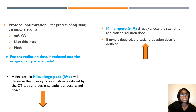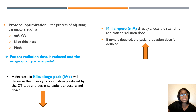Protocol optimization is the process of adjusting parameters such as MA, KVP, slice thickness, and pitch so that patient radiation dose is reduced while image quality remains adequate. A decrease in KVP will decrease the quantity of x-rays produced by the CT tube, decreasing patient exposure and dose. MA affects scan time and patient radiation dose — if MA is doubled, the patient radiation dose is doubled.